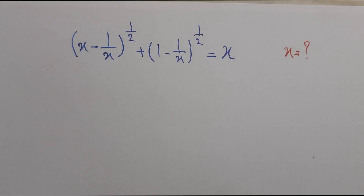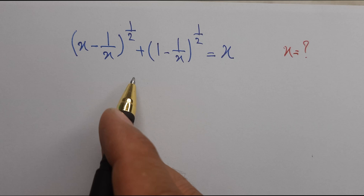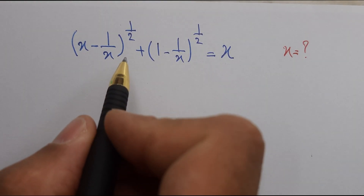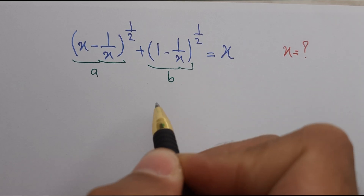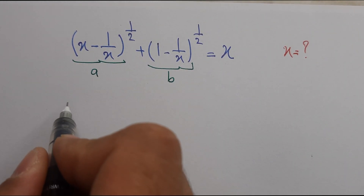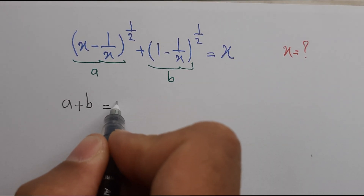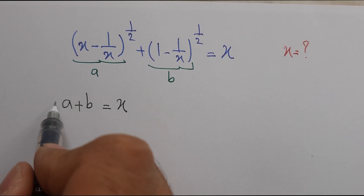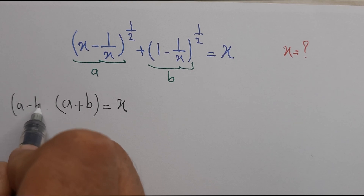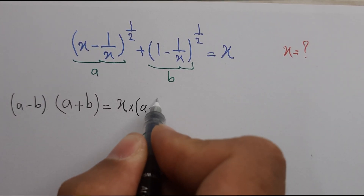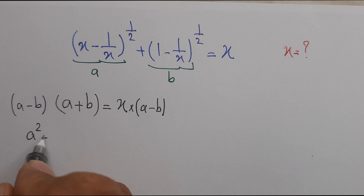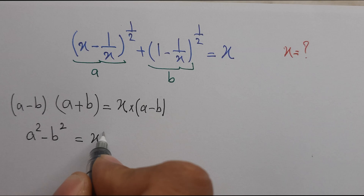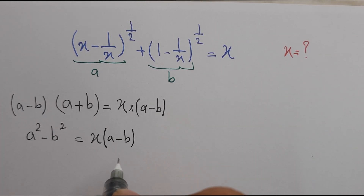Hi everyone, we have an excellent olympian question that we should solve and find x. Now here, if this is a and this is b, we have a plus b equals x. We can multiply a minus b on both sides, so we have according to the identity a squared minus b squared on the left side, and x times a minus b.